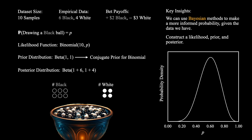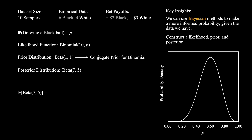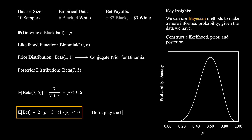Now let's see what this resulting posterior distribution tells us about our bet. We can find the expected value of p given the beta distribution with parameters 7 and 5. From the formula for the expected value of a beta distribution, this is simply 7 divided by 7 plus 5. This fraction is strictly less than 0.6. Plugging this p-value into the expected payoff — 2 times p minus 3 times (1 minus p) — we see that the new expected value is now strictly less than 0. Thus, this is not a fair bet. We shouldn't take this bet.